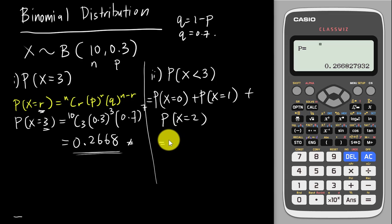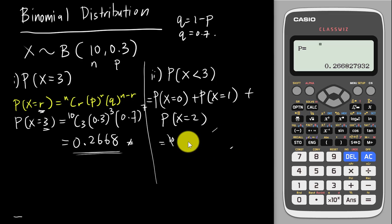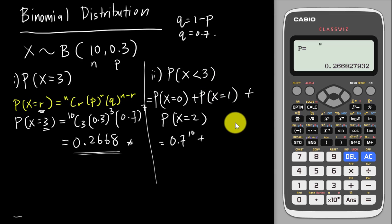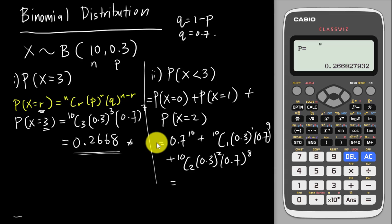The first term is 10C0 × 0.3^0 × 0.7^10. Since 10C0 = 1 and 0.3^0 = 1, this simplifies to just 0.7^10. The next term is 10C1 × 0.3^1 × 0.7^9. Then I add 10C2 × 0.3^2 × 0.7^8.